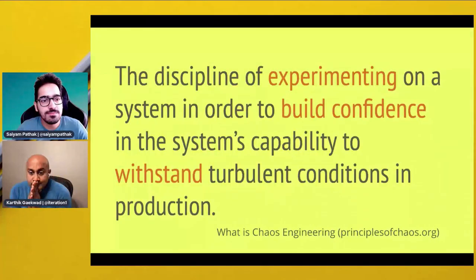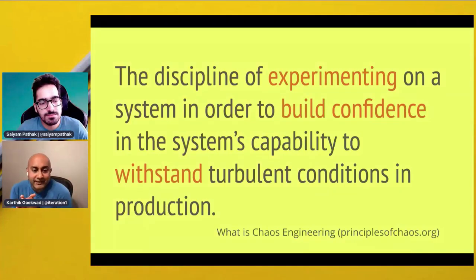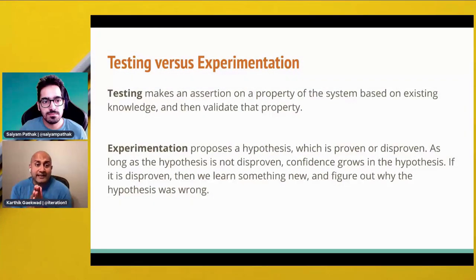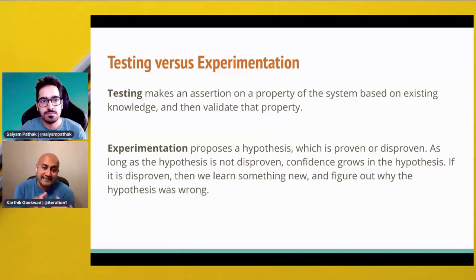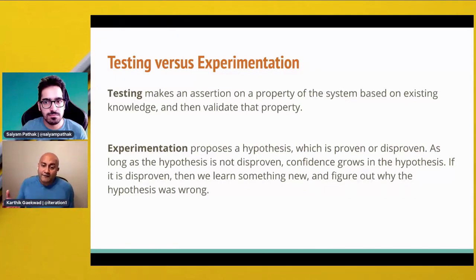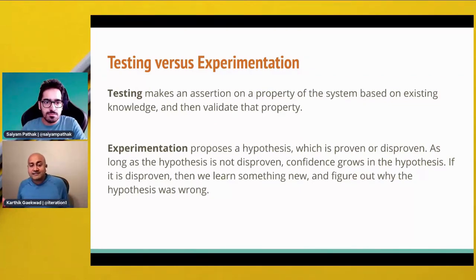So enter chaos engineering. How does this help us? Chaos engineering is defined as the discipline of experimenting on a system in order to build confidence in the system's capability to withstand turbulent conditions in production. This definition comes from principlesofchaos.org — go check out that site. Testing is the idea of making an assertion on a property of a system based on existing knowledge and validating that specific property. Experimentation, on the other hand, is proposing a hypothesis which can either be proven or disproven.